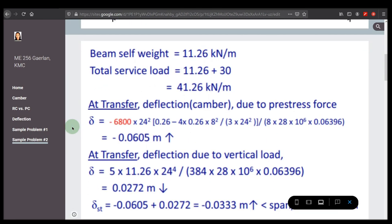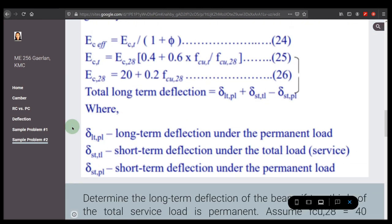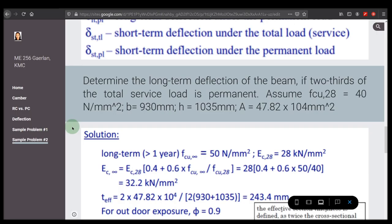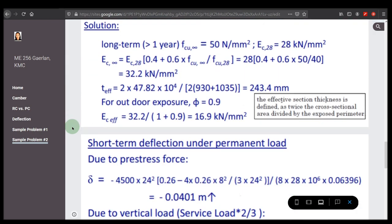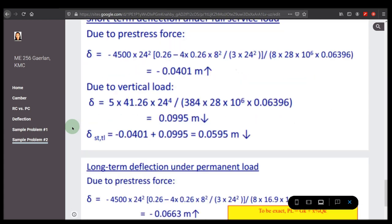Then after solving that, we need to determine the long-term deflection of the beam if two-thirds of the total service load is permanent. Assume fcu at 28 day is 40 N per square millimeter, the width is 930 millimeters, and the depth is 1035 millimeters. Area for the cross-section is 47.82 × 10⁴ square millimeters. The solution for the sample problem is shown.